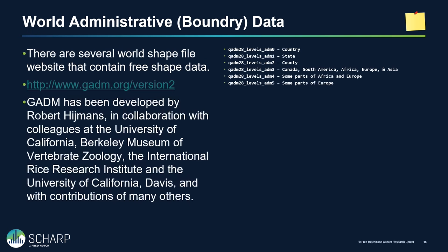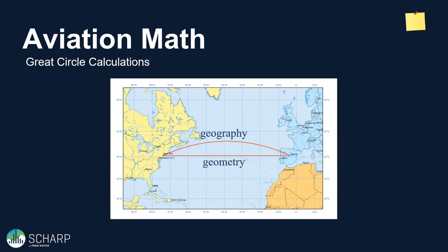For the world data set, here's the download link. They have six different levels of data and you can download a combined file, but if you're using QGIS you may only want to load one level at a time. Admin zero is country level, admin one is state level, admin two is county. Levels three through five are available but only for certain parts of the world, not everywhere.